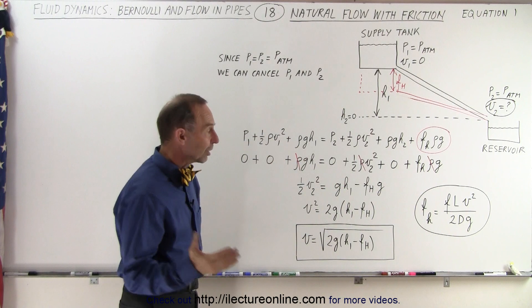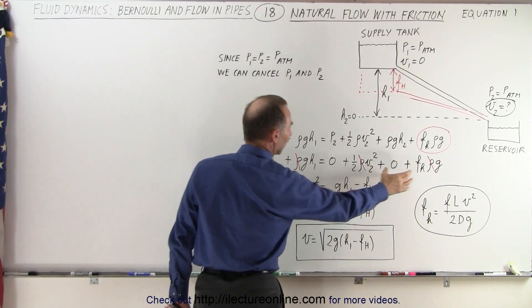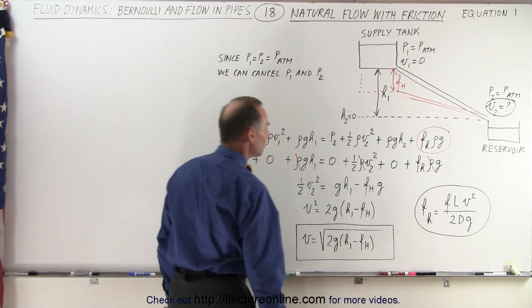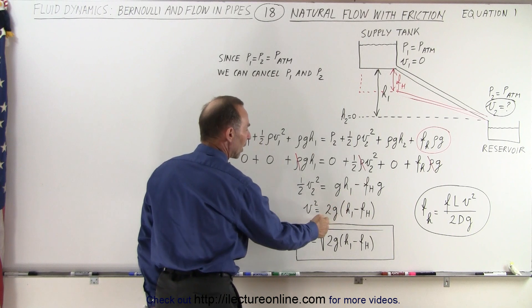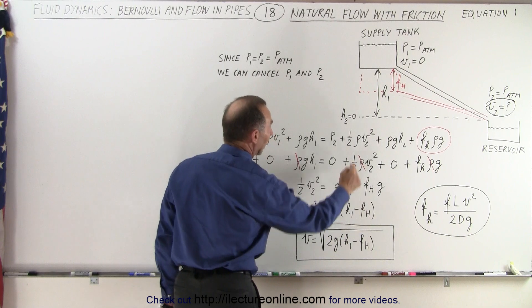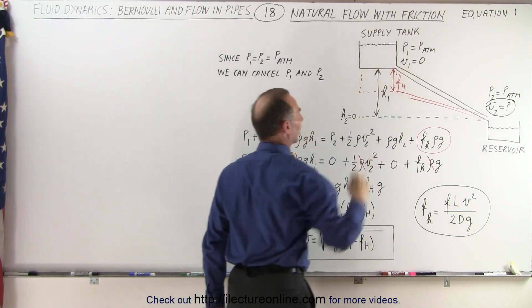If we then solve that equation for v2, we have one-half v2 squared is equal to gh1, and then bring this term across, becomes minus frictional head loss times g. And then we'll take the two across—we have two. We factor out a g: two times g times the difference of the height, h1 minus the frictional head loss. That's this head loss right there.